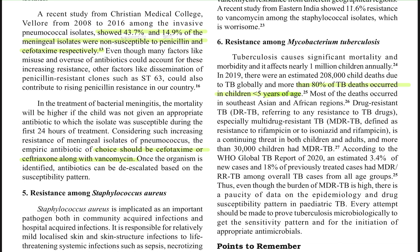Drug-resistant tuberculosis is on the rise. We specifically look for rifampicin resistance, and when there is rifampicin resistance, co-existent isoniazid resistance can also occur. Nearly 3.4 percent of new cases and 18 percent of previously treated cases had multi-drug resistant or rifampicin-resistant tuberculosis. You always need to look for resistance and see if the primary treatment regimen needs modification.